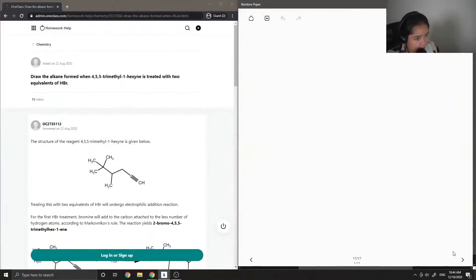Okay, so we'll move on to question 6, which asks to draw the alkane formed when 4,5,5-trimethyl-1-hexyne is treated with two equivalents of HBr. So let's try to draw out this structure together. 4,5,5-trimethyl-1-hexyne. It looks pretty complicated, but if we just break down the steps, it's pretty easy to draw this type of molecule.